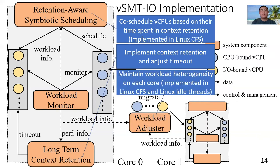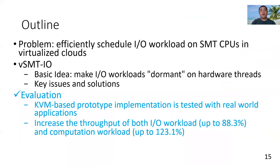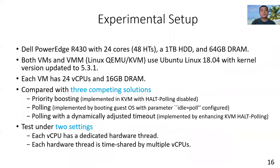The workload adjuster component maintains workload heterogeneity to further improve effectiveness of vSMTIO on each core. This component is implemented based on Linux CFS and idle thread in the host OS. We test our prototype implementation with real-world applications. Our evaluation shows vSMTIO can increase both IO workload throughput and computation workload throughput. We conduct our evaluation with Linux and KVM on an Intel Power BI server.